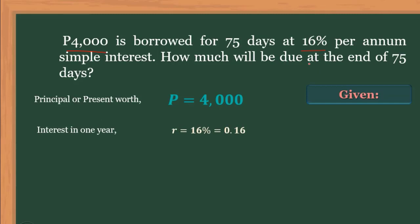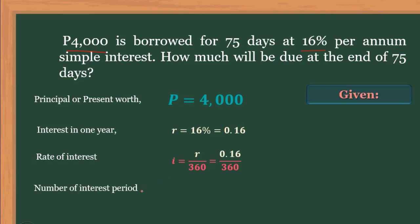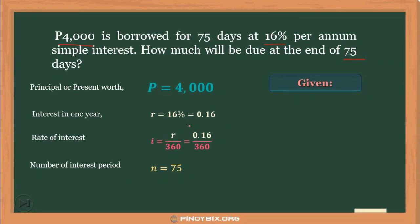That's 0.16. The rate of interest is equivalent to the interest in one year over 360. Since this is simple interest, we assume the total number of days in one year is equivalent to 360, so we have 0.16 over 360. The number of interest periods is equivalent to 75 days. What we are looking for — the unknown — is the accumulated amount, or the future worth.